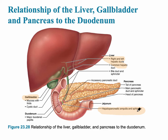The sphincter is essentially where the valve is located. The first section — the duodenum — is the entire length of and the shortest section of the small intestine. The second part is the jejunum, and the most distal part of the small intestine is referred to as the ileum.